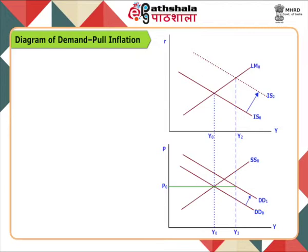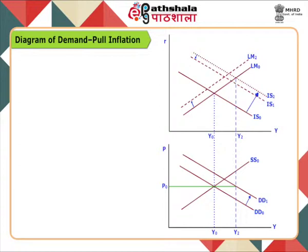This shift in savings would move the IS curve to the left. In the upper panel, due to the increase in price level, the IS curve shifts from IS2 to IS1. The rise in price level would also decrease the real value of money supply, causing the LM curve to shift to the left — specifically from LM0 to LM2. Due to the shift in both IS and LM curves, a new equilibrium is established at Y1 level of output.